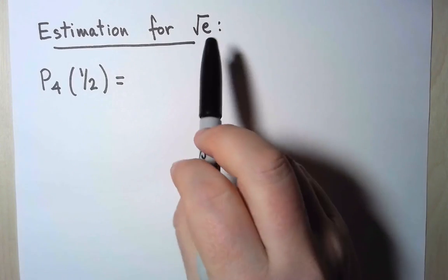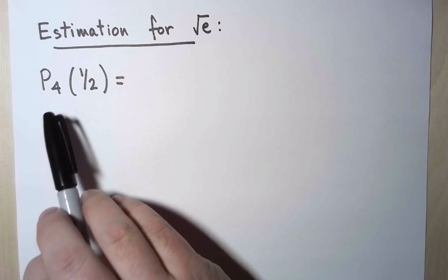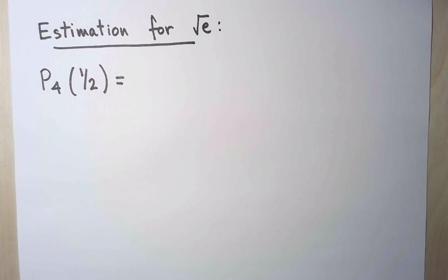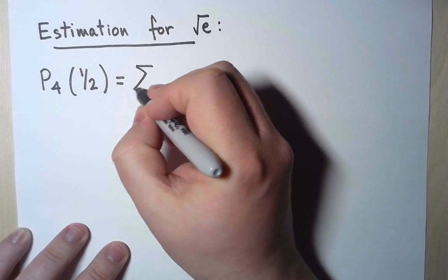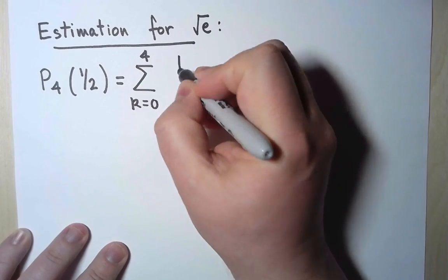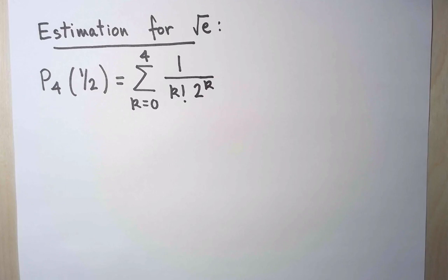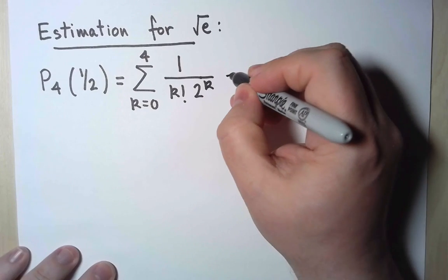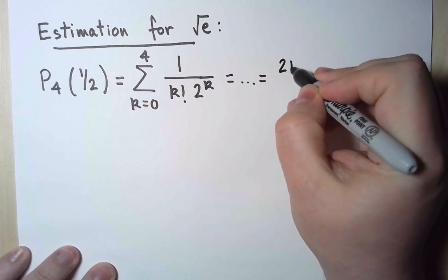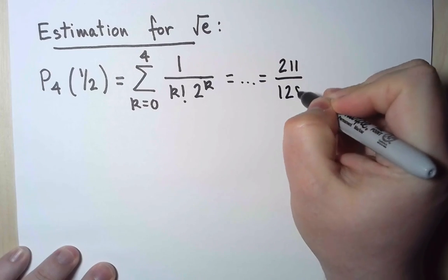To conclude, my estimation for square root of e is the fourth Taylor polynomial for the exponential function centered at 0, evaluated at 1/2. Or explicitly, it could be this finite sum. This is just the sum of four terms, so it is easy to perform. Compute them, and as a rational number, you will get 211 over 128.